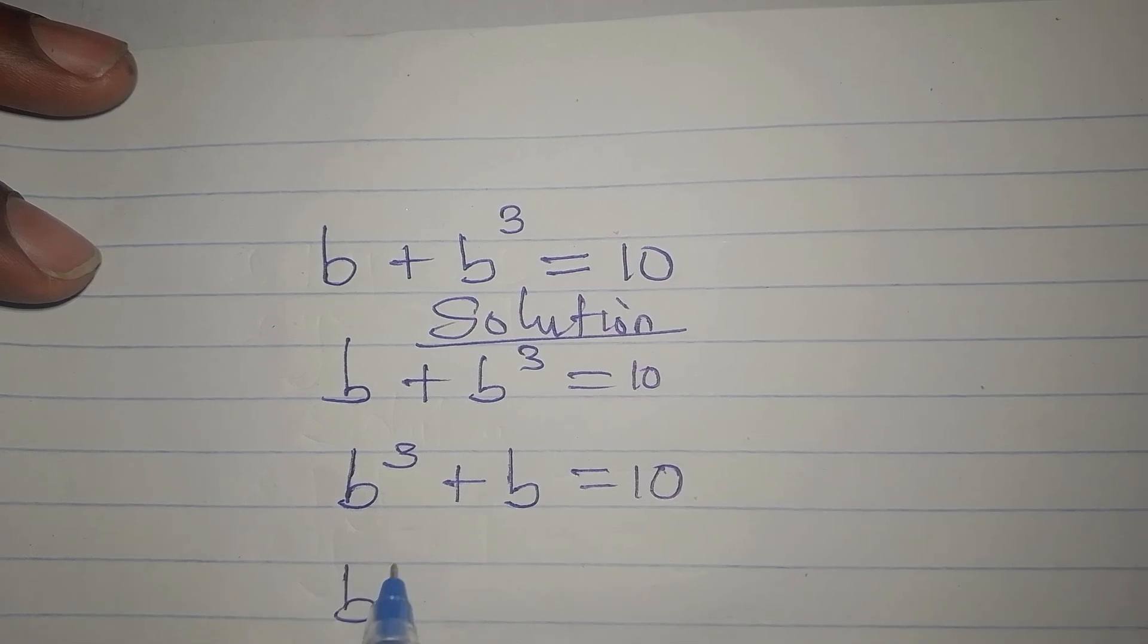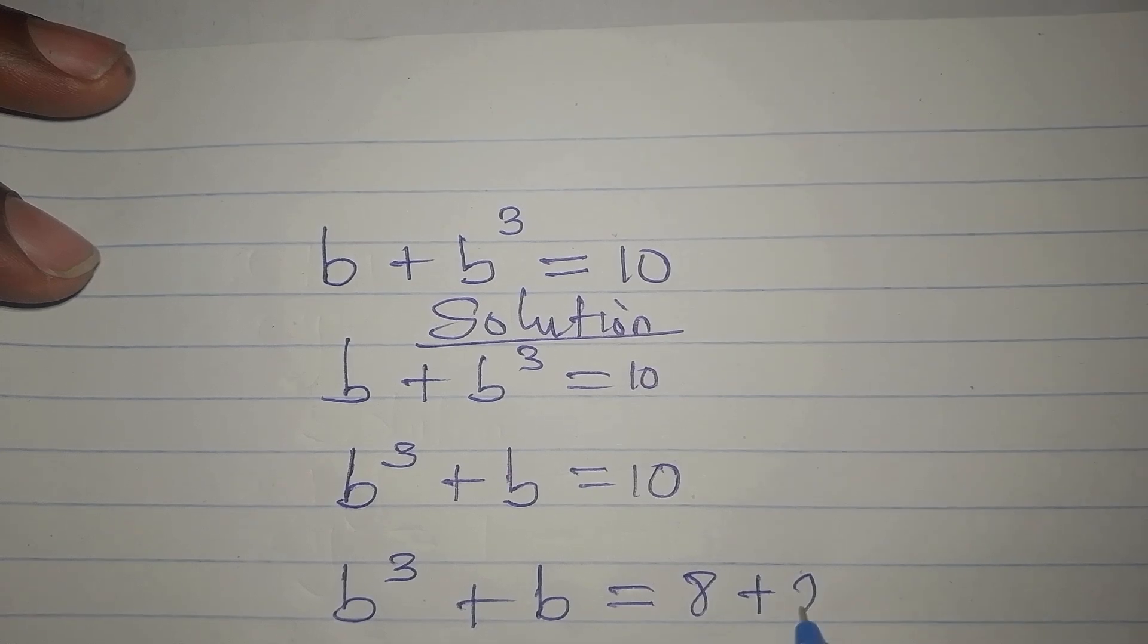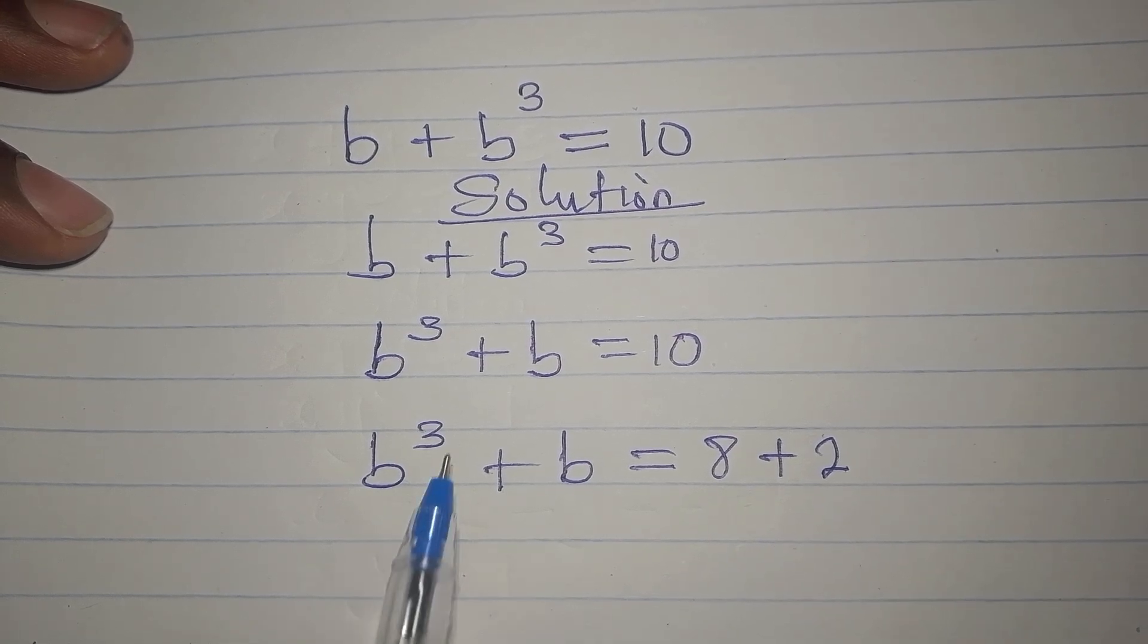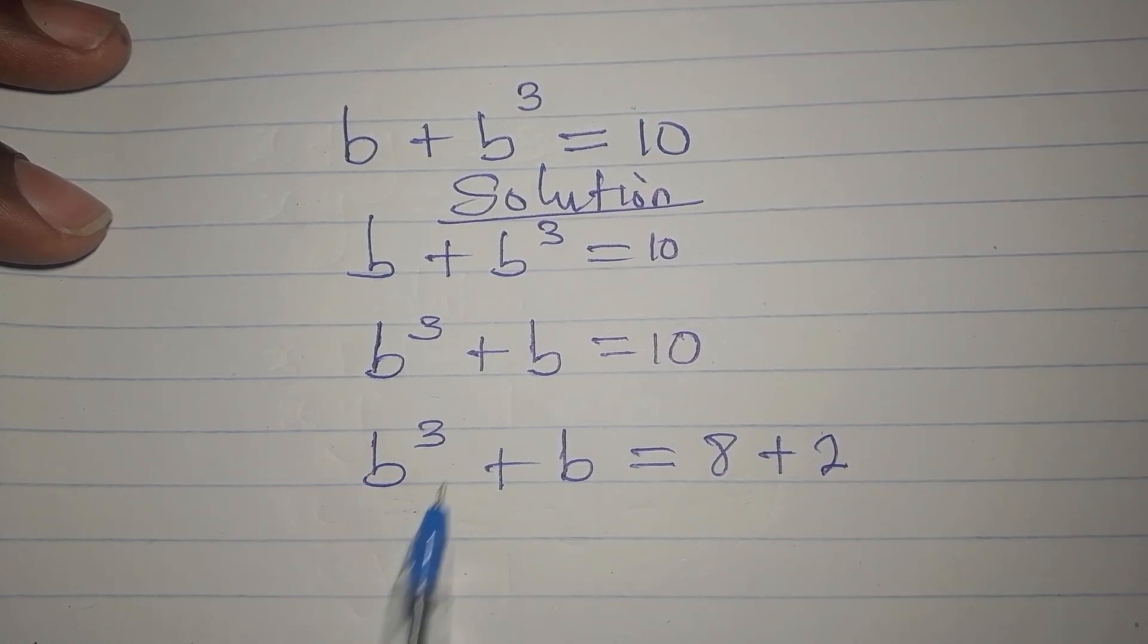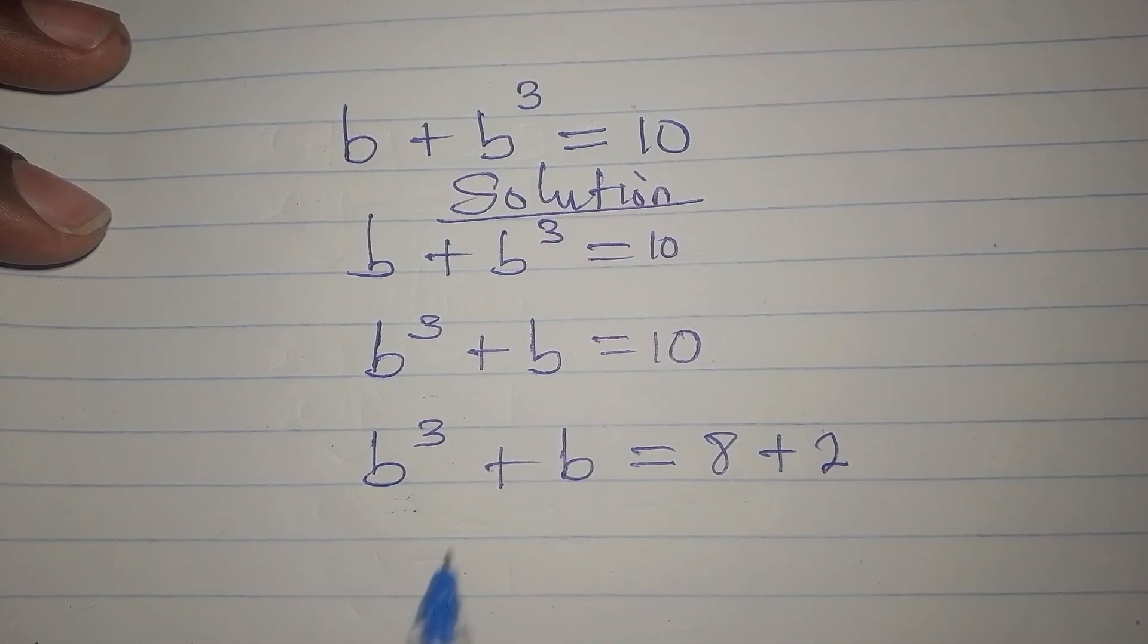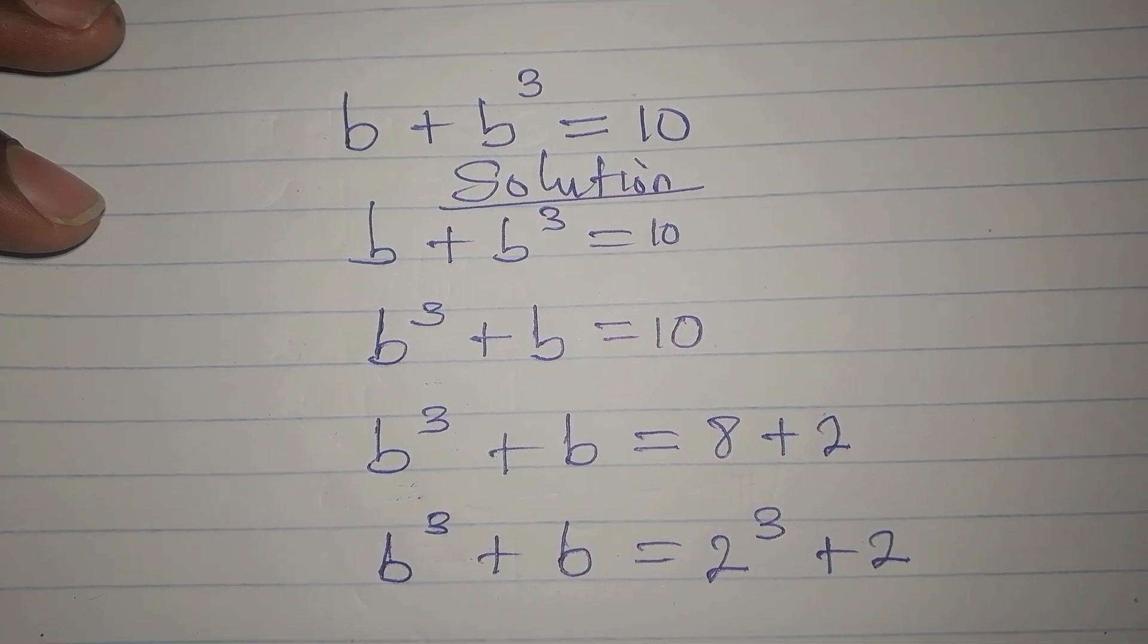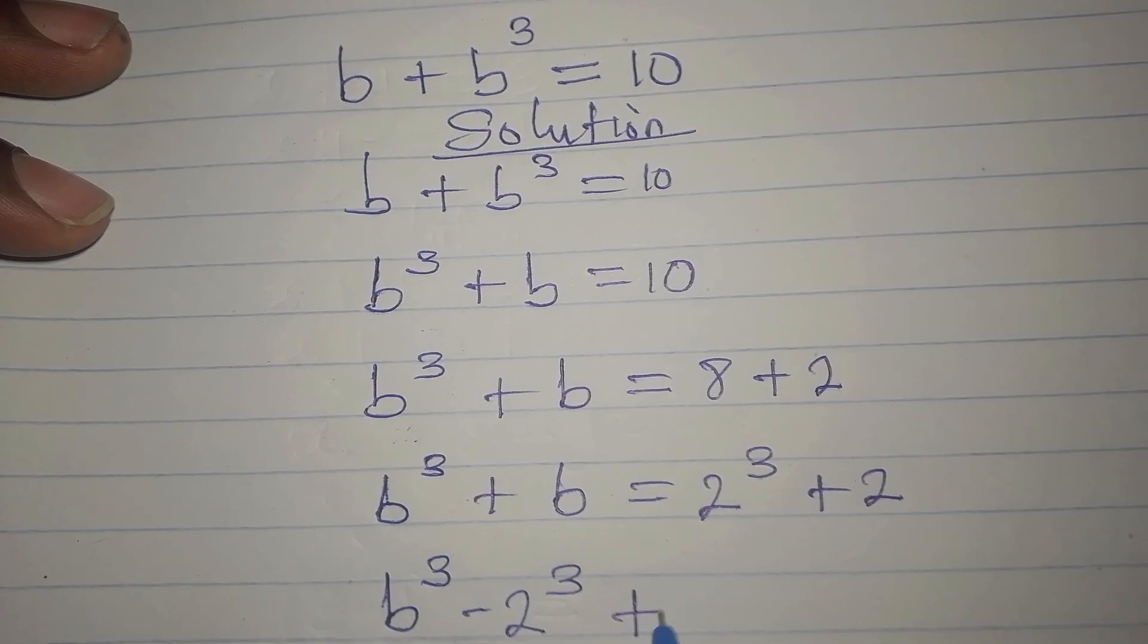Now you can do b³ + b = 8 + 2. I could have done 5 + 5, but that won't work because of the terms we have. This term should be 8. So I'm going to write b³ + b = 2³ + 2, so that if I rearrange, I'll have b³ - 2³ + (b - 2) = 0.